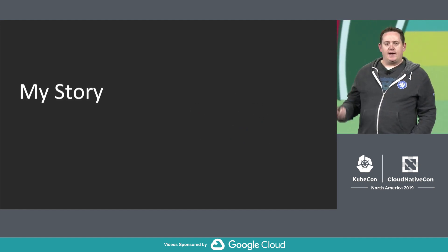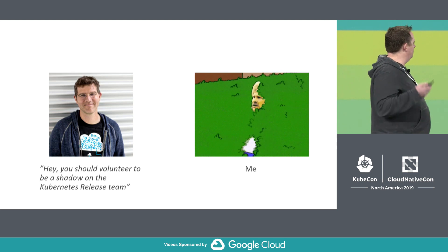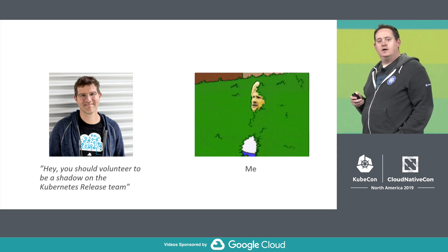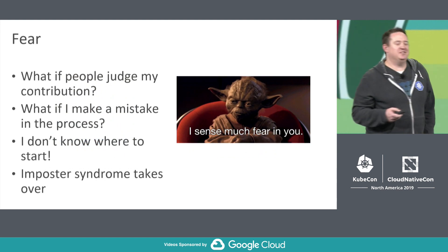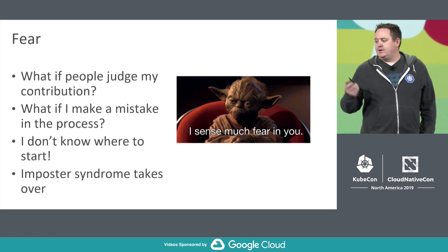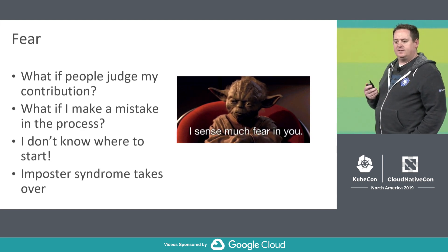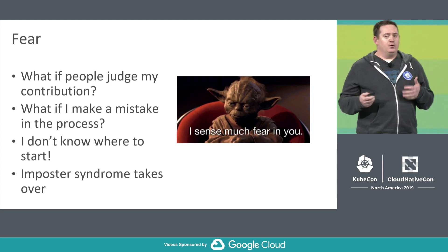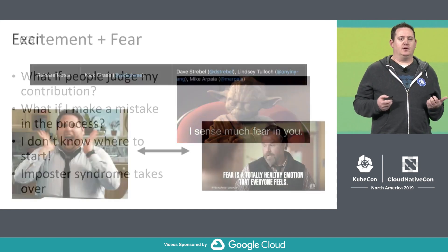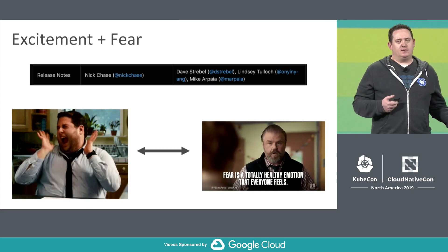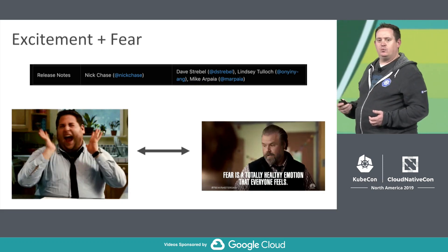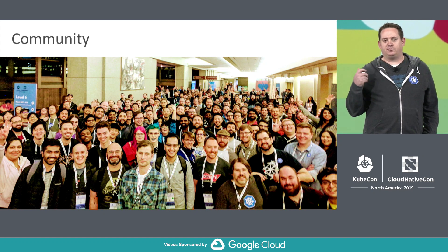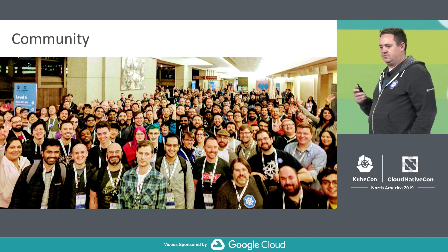A little on my story — how I got started. This guy here, his hair's a little longer now, said 'Hey, you should join and shadow the release team.' And that is me. The first thing was fear — you're going to feel fear when you go through this, it's a natural human reaction. What if I make a mistake in the process? I don't know where to get started. But there's tons of help out there. When I joined the release team, I had excitement but also fear. What I found was there was a huge community out there to help you. Everybody in this community is great, and I think that's why Kubernetes is so special — because of the community that's there to help you.